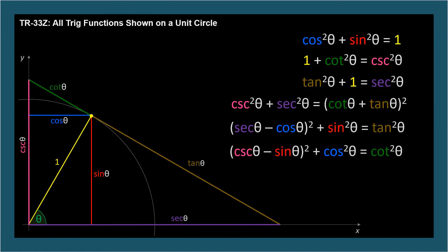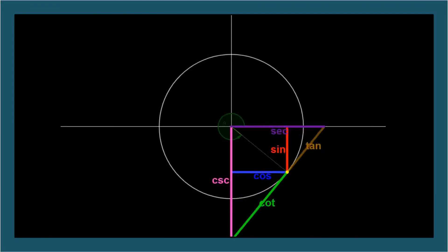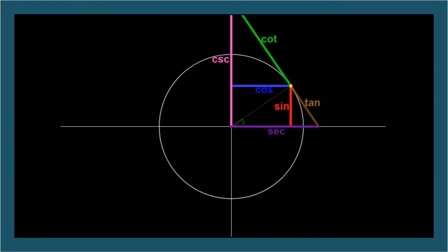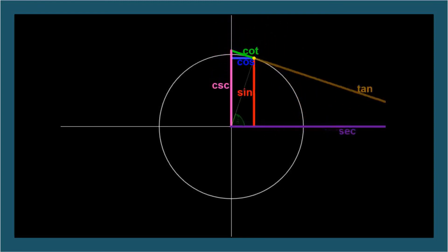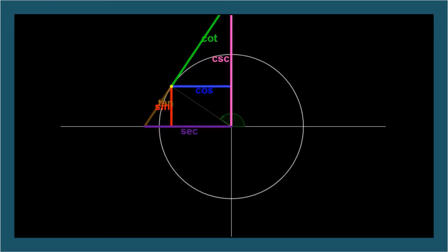Here's an animation showing these color-coded segments as angle theta progresses around the circle. I think it's kind of mesmerizing, especially when you consider the graphs of these functions. Can you see how sine and cosine oscillate back and forth between negative one and one?